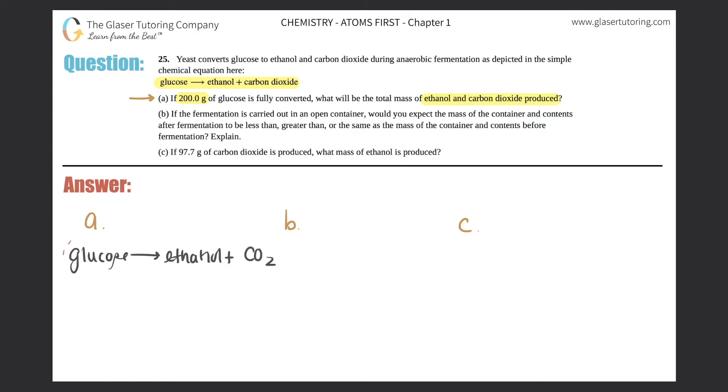Now just remember the law of conservation of matter states that the whole reactant side in total mass has to equal the whole product side in mass. So they're saying that 200 grams of glucose is fully converted. Fully converted means that there's no reactants left, and the reactants is always on the left side.